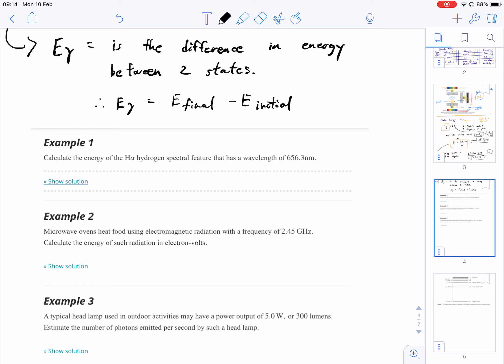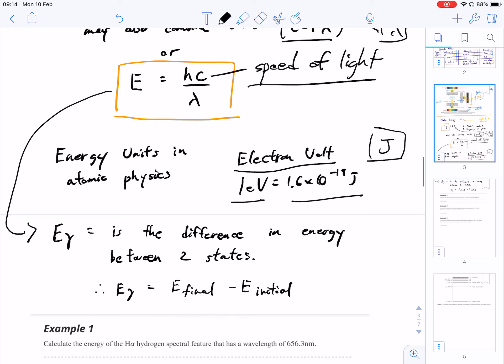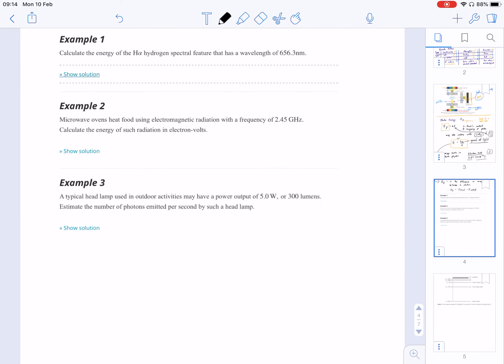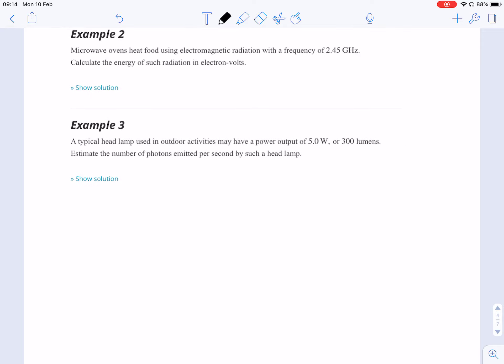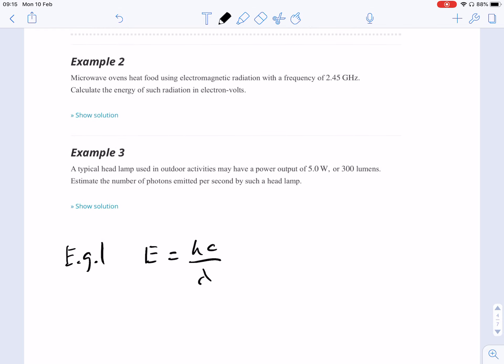So the first example we're going to look at is calculate the energy of the hydrogen gamma, H gamma hydrogen spectral feature that has a wavelength of 656.3 nanometers. So we're going to start our work down here. So we're probably going to be using this formula right here, E equals, let me shrink that up. So this is example number one. We're going to be looking at E equals hc over lambda. And what we're given is calculate the energy. So E equals that.